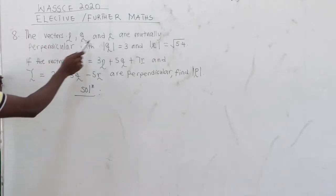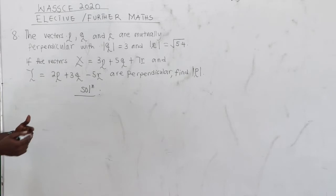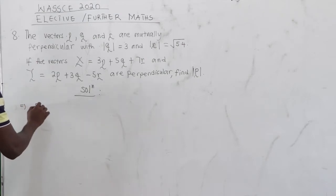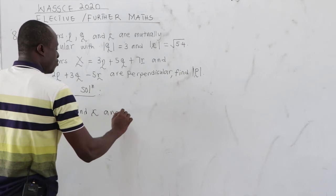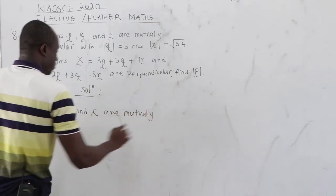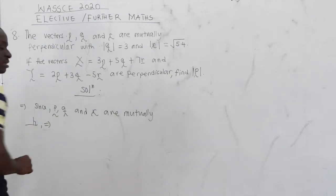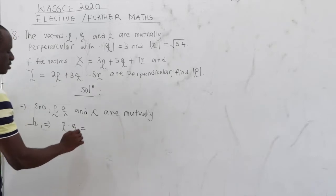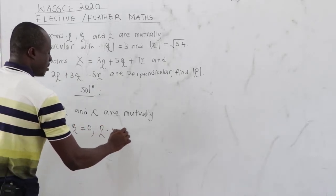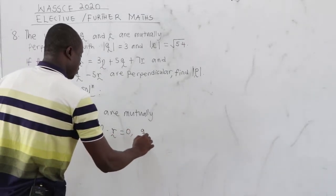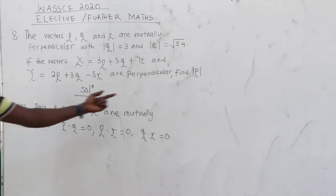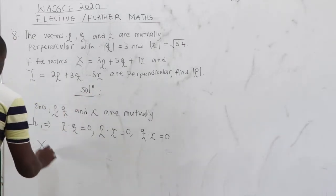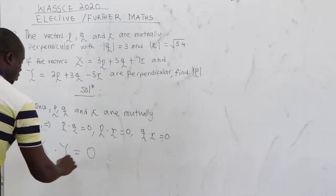We have been told that the vectors P, Q, and R are mutually perpendicular. Since vectors P, Q, and R are mutually perpendicular, this means that P dot Q equals 0, P dot R equals 0, and Q dot R equals 0. We are also told that vectors X and Y are perpendicular, and because X and Y are perpendicular, X dot Y equals 0.